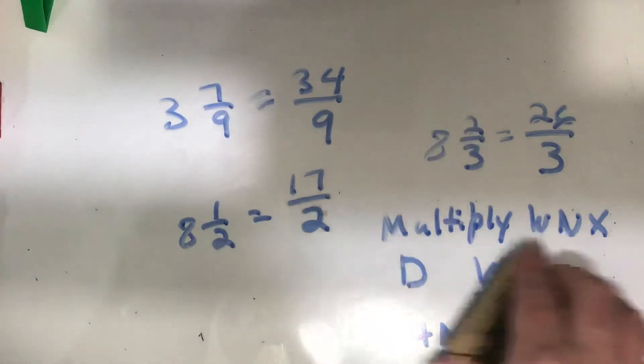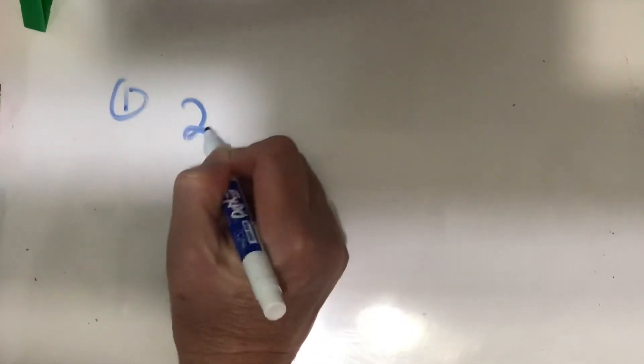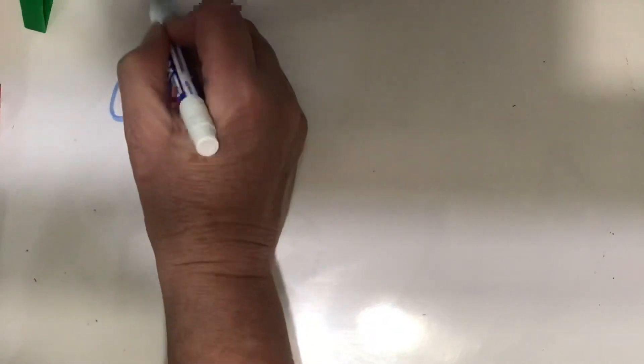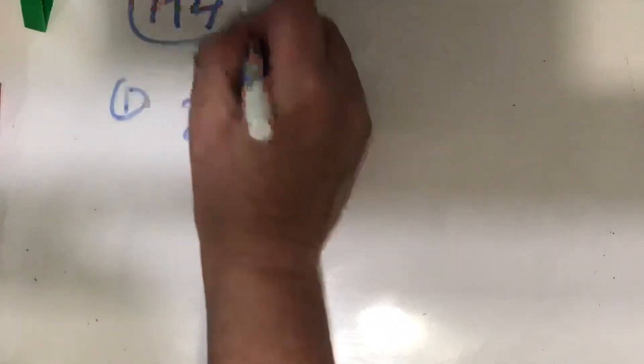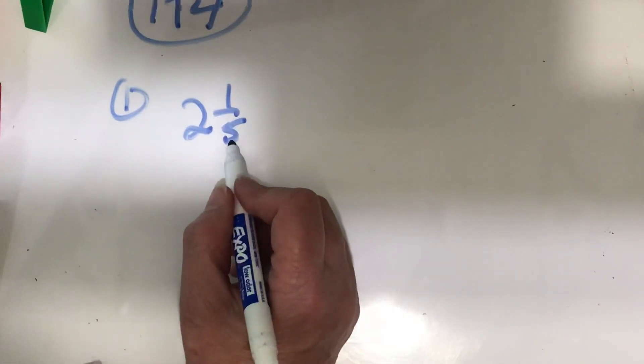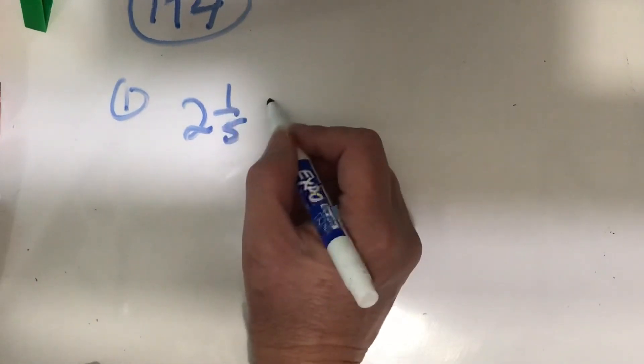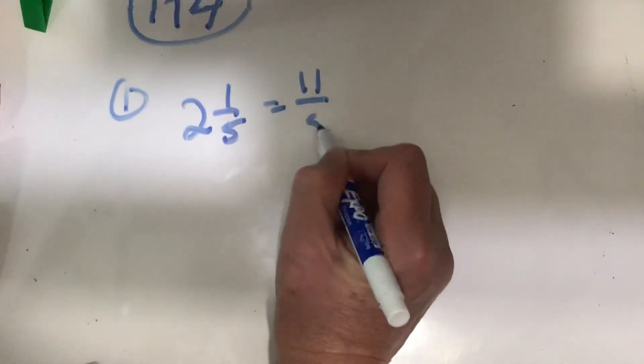In your workbook on page one hundred and seventy-four, you're only going to do one through nine. This is just changing these mixed numbers to improper fractions. So number one says two and one-fifth. Two and one-fifth — so I have two wholes, each whole will have five-fifths. So two times five is ten, plus one makes eleven. So this is eleven-fifths.